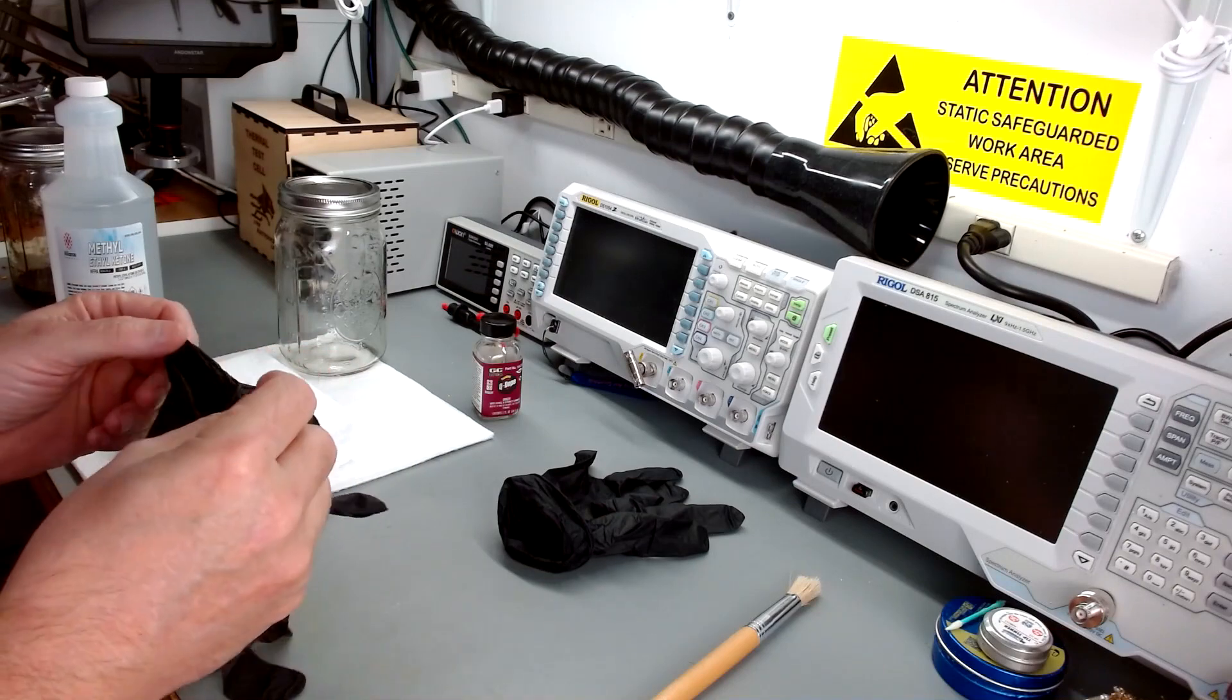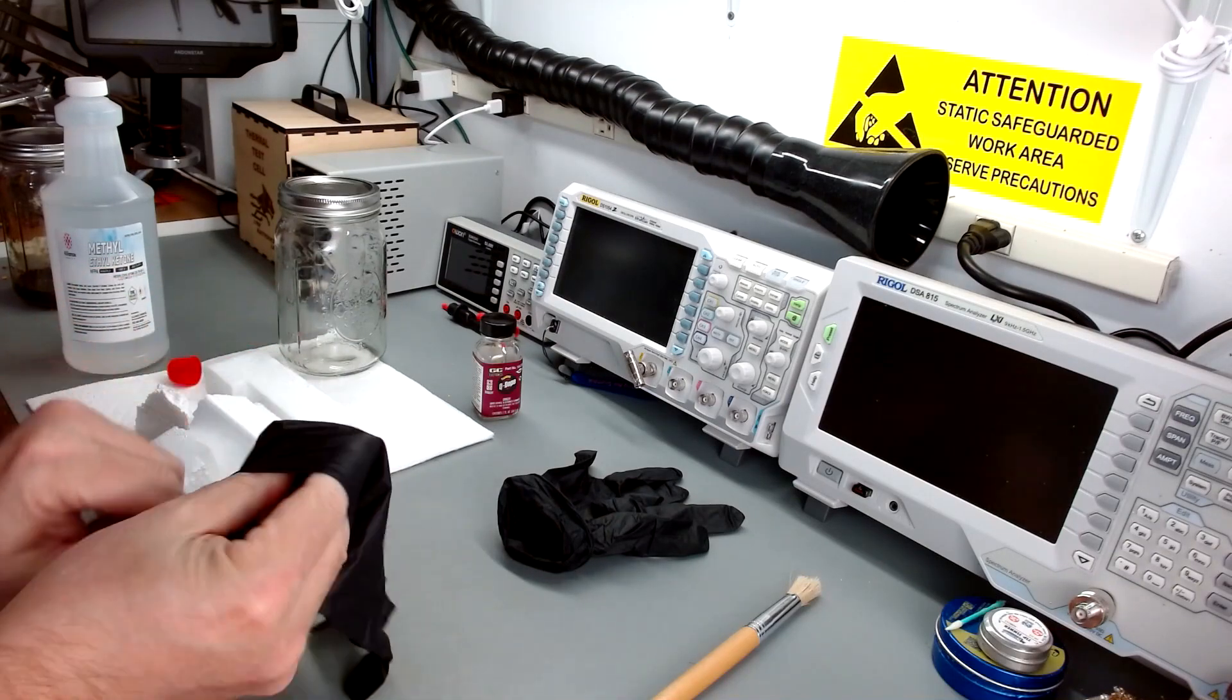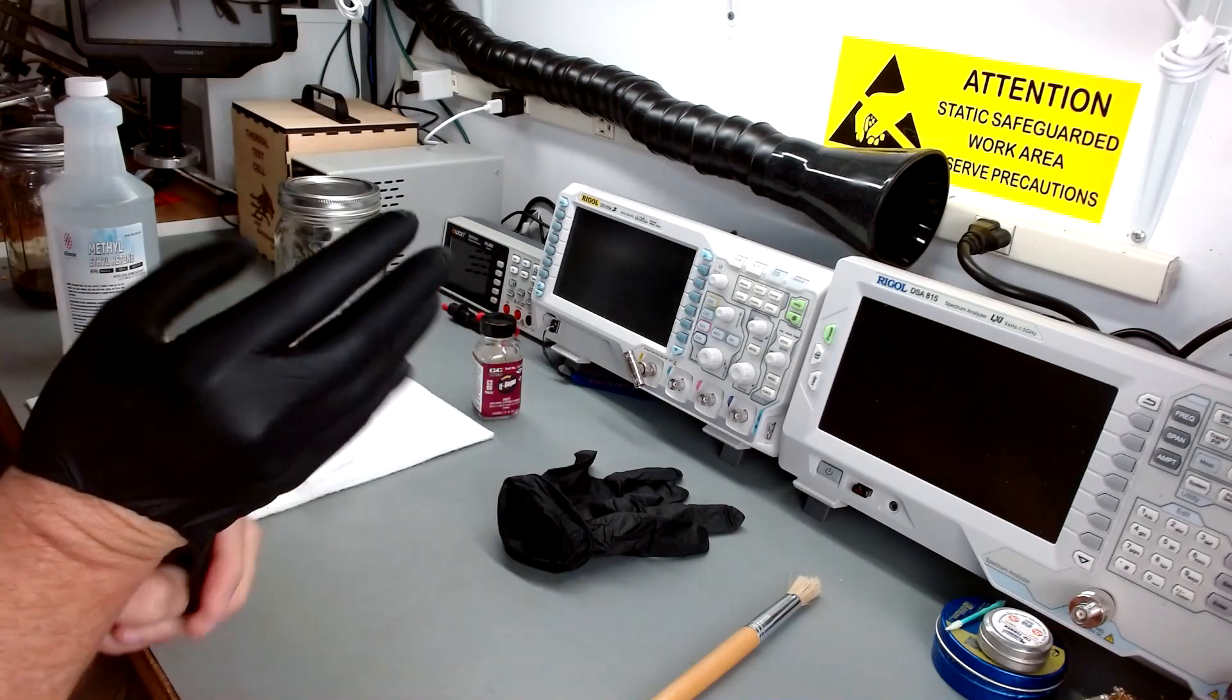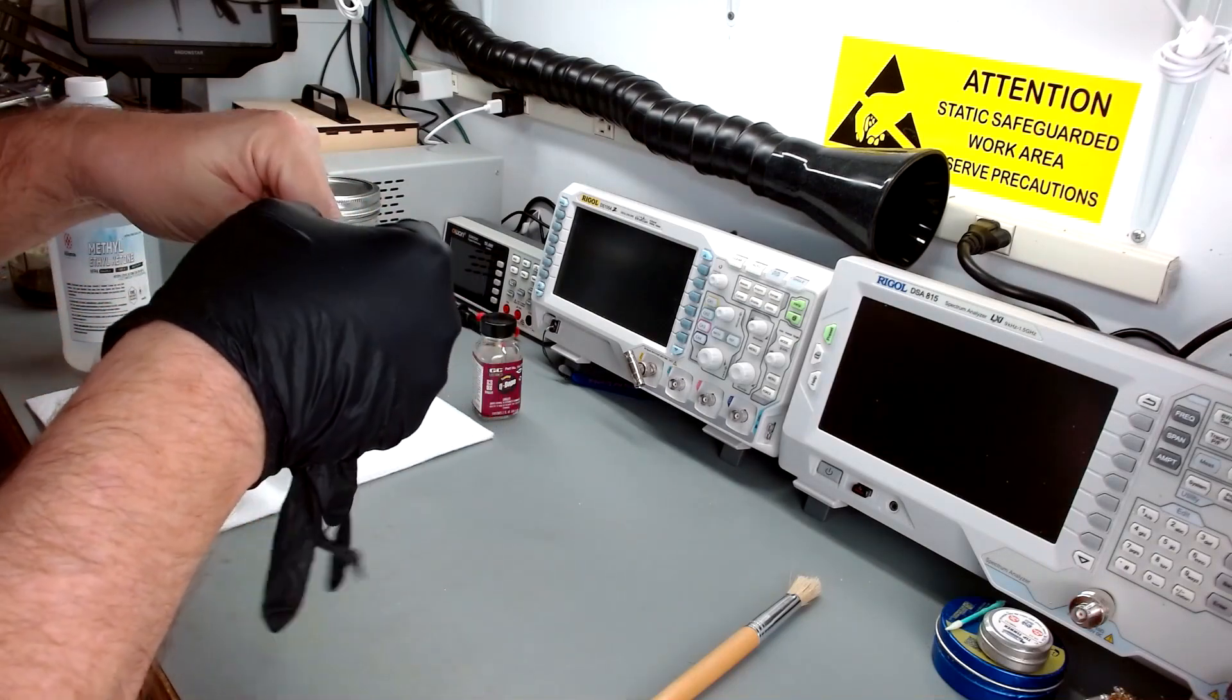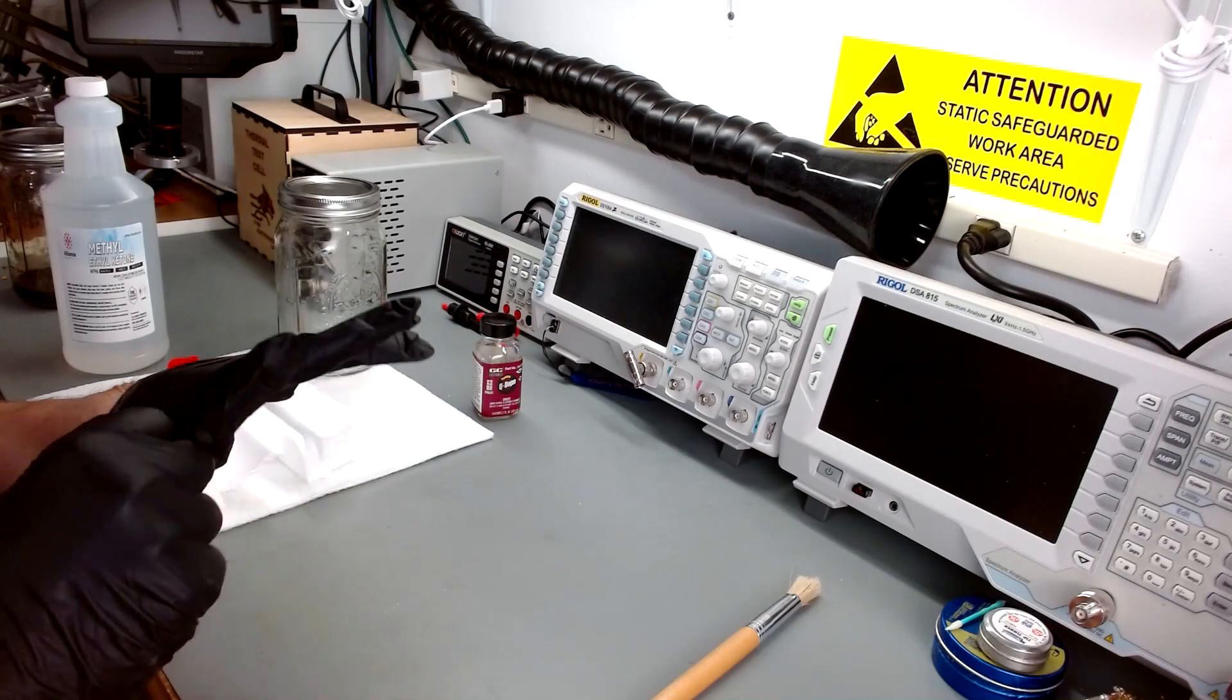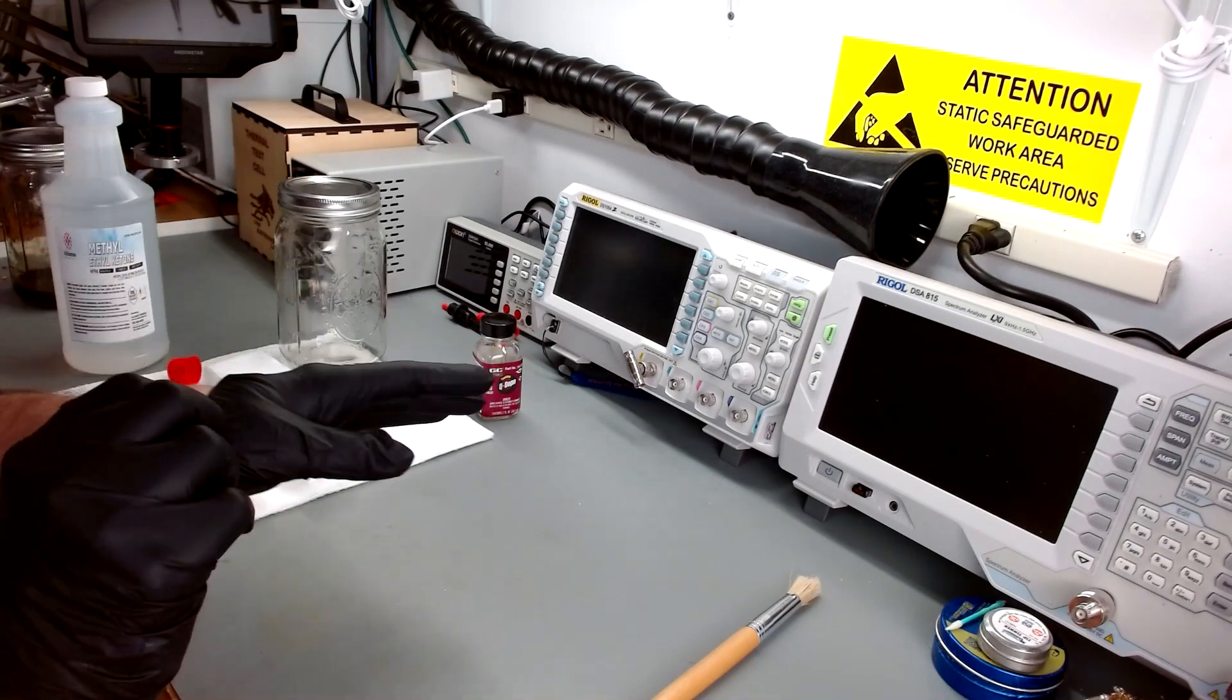It's not hard to make but it does contain nasty stuff, so you definitely want to get some gloves on. There's probably a number of solvents you can use - the original used MEK, methyl ethyl ketone, and that's what I'm going to use.